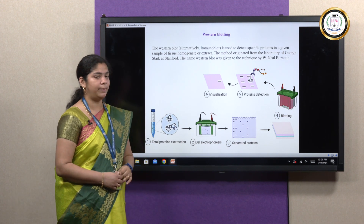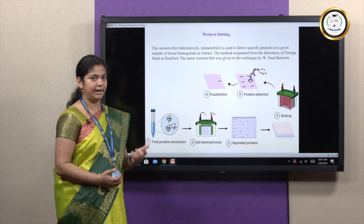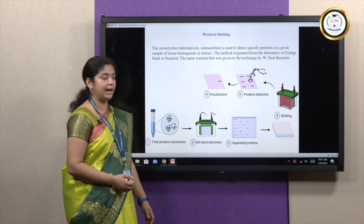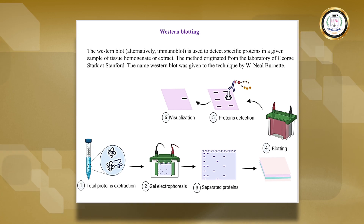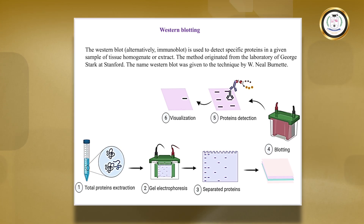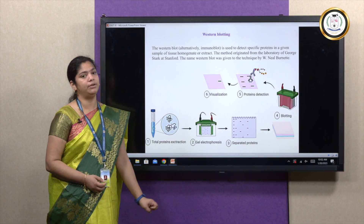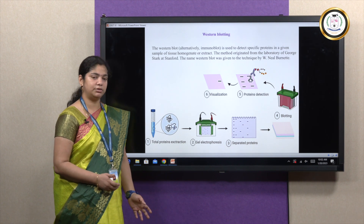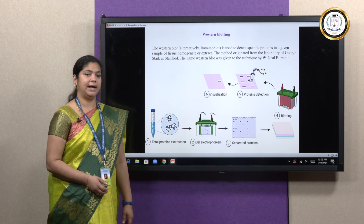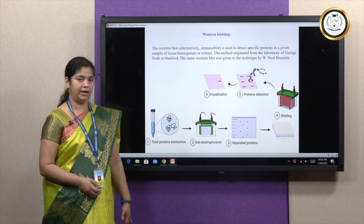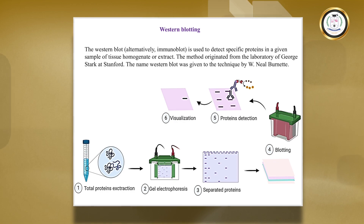After SDS-PAGE analysis, the separated proteins are transferred to a nylon or PVDF membrane. This is then incubated with a specific antibody — which is why this method is called immuno-western blotting. Non-specific binding is washed off, and detection can be achieved by colorimetric or chemiluminescent-based methods.